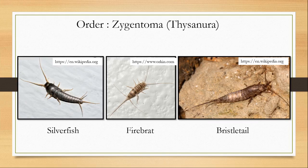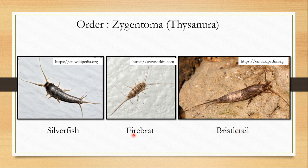Hello and welcome to my class. In this video, I am going to discuss the salient features and suitable examples of order Zygentoma. This order was previously known as order Thysanura. It belongs to subclass Apterygota, the subclass of wingless insects. Silverfish, firebrats, and bristletails are common examples under order Zygentoma.